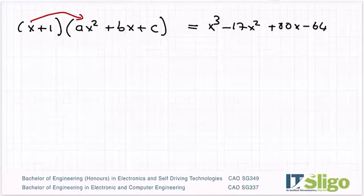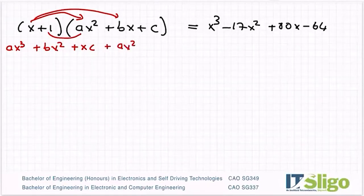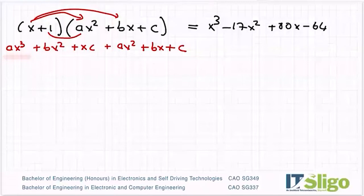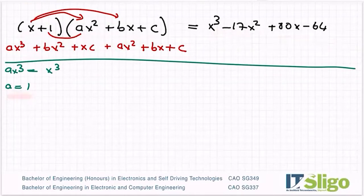So I'm going to get ax cubed from this, bx squared when I multiply this by that and x by c, then coming across the bottom I get ax squared plus abx plus ac. The factor I found was x minus one. If I multiply that by a general quadratic ax squared plus bx plus c, I get this cubic. Equating the x cubed terms: a times x cubed equals x cubed, therefore a equals one.